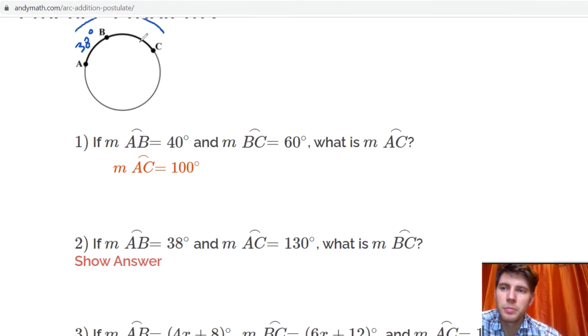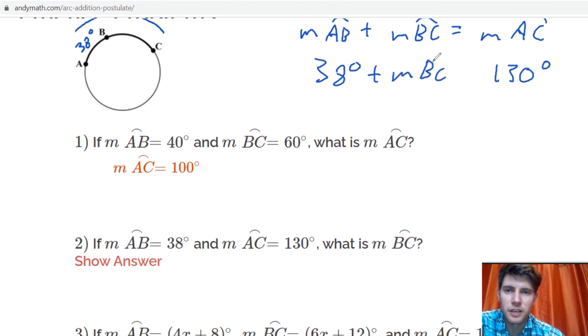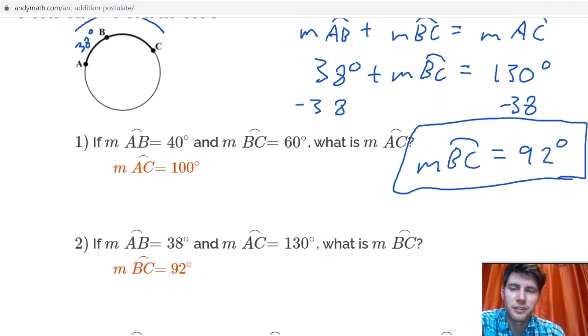Now in order to find BC, we can apply our notes, which is that the measure of AB plus the measure of BC is equal to the measure of AC. And now the measure of AB we know is 38, and the measure of AC we know is 130. The one thing we don't know yet is the measure of BC. So we can solve for the measure of BC by subtracting 38 from both sides, and we get the measure of BC is equal to 92 degrees. And that's the answer.